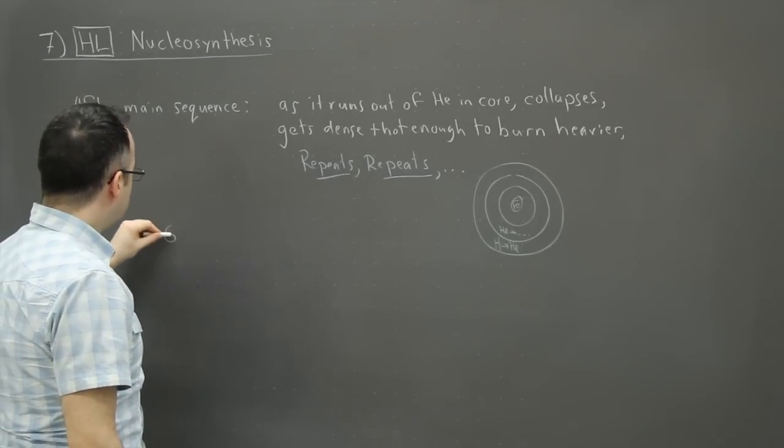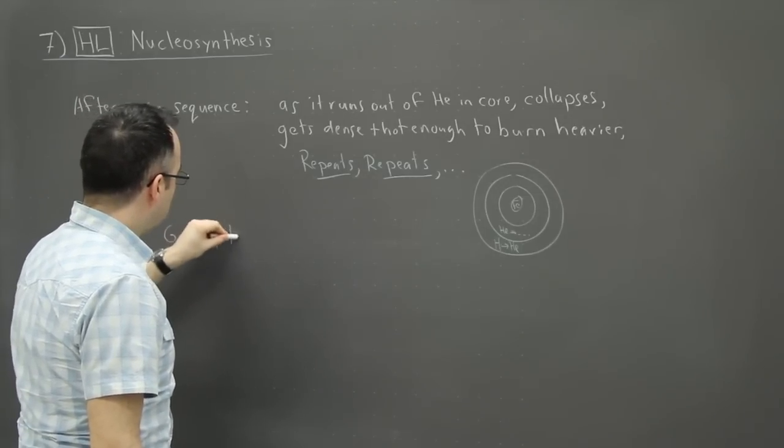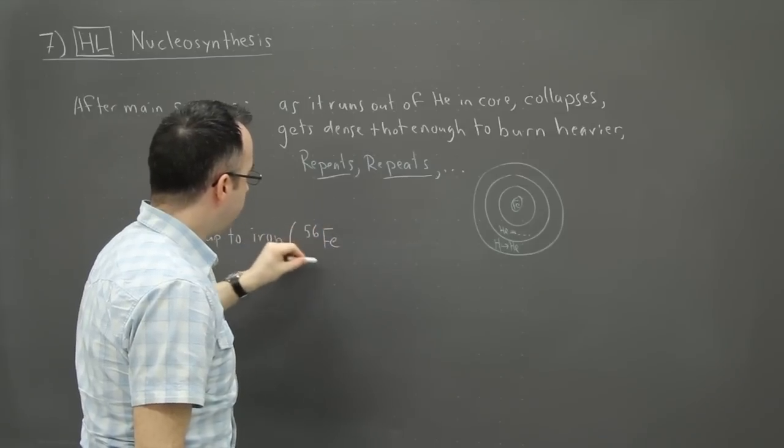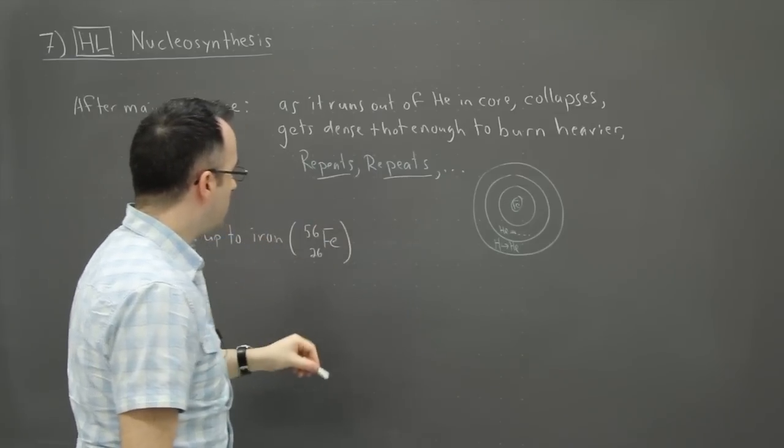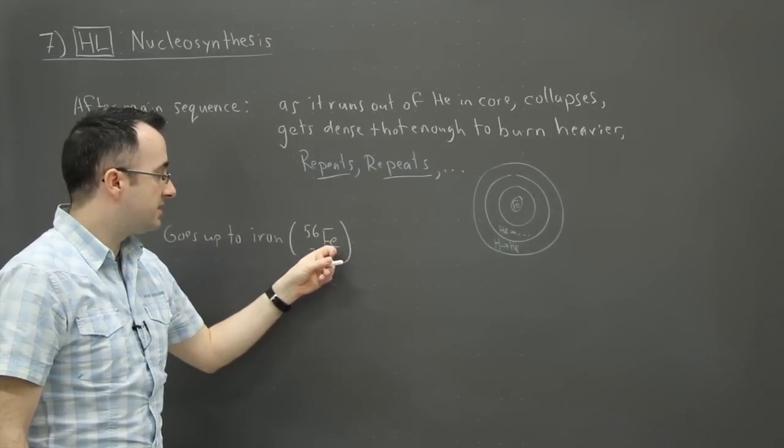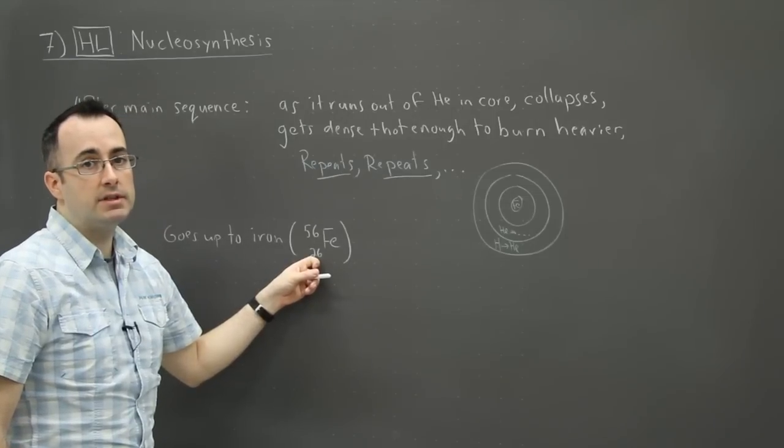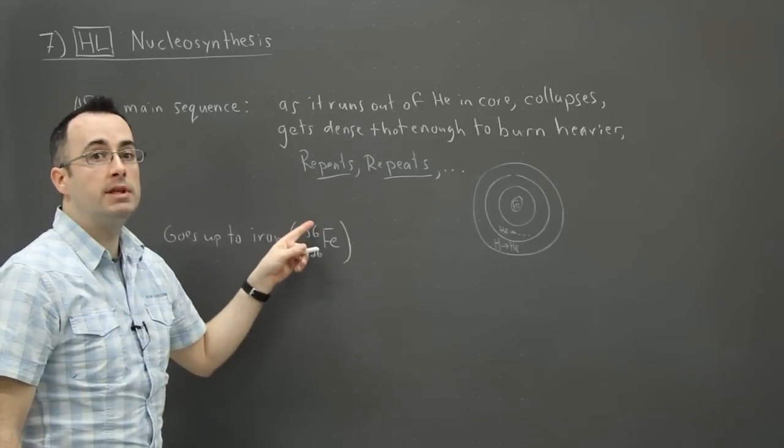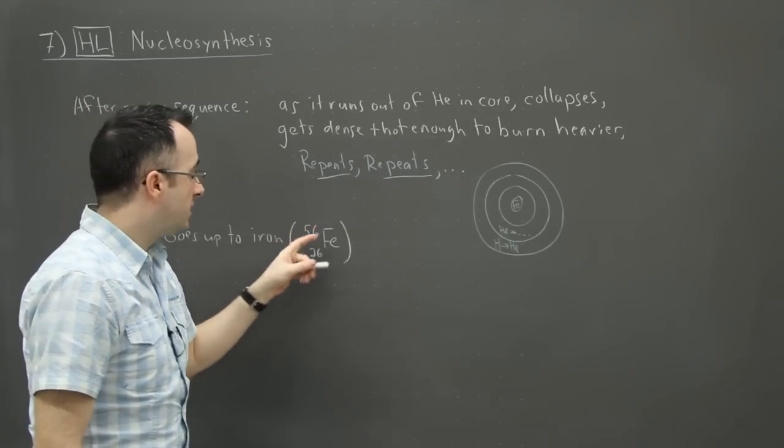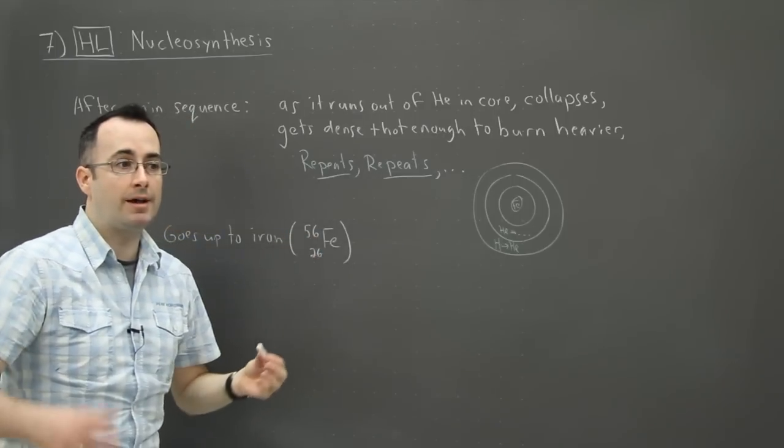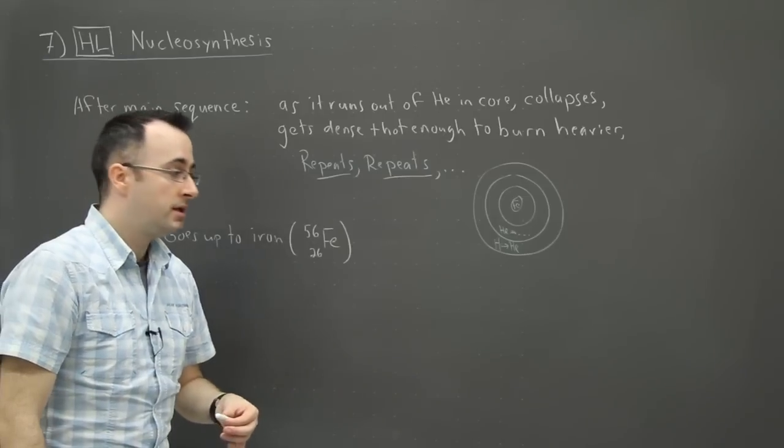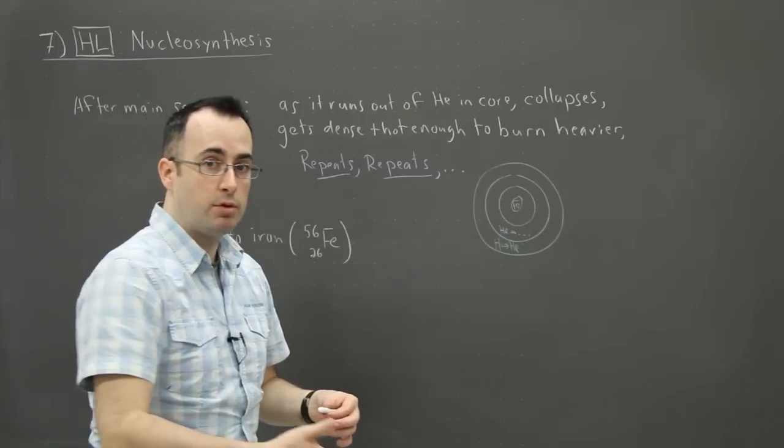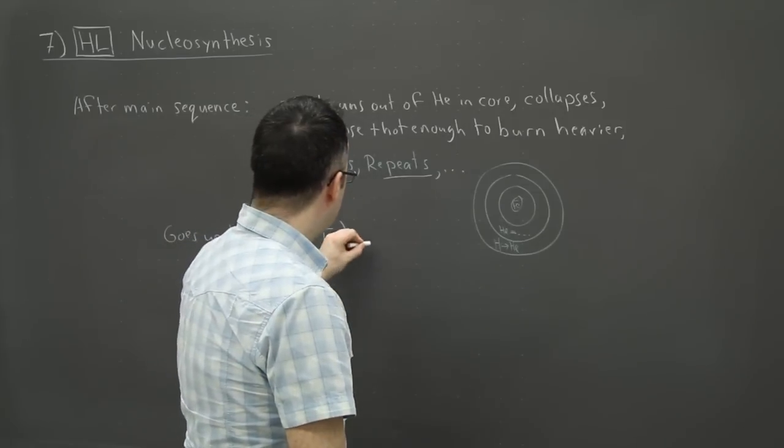Okay, so it goes up to iron. In other words, this is the symbol Fe. It's element number 26 as we talked about in nuclear physics. This tells us that this is the 26th element in the periodic table. This tells us the number of protons it has. 56 is the number of nucleons and that's the key thing here. For some reason, this right here seems to be the maximum thing that stars can make naturally. In other words, after this in the core, it's not energetically favorable to fuse iron.